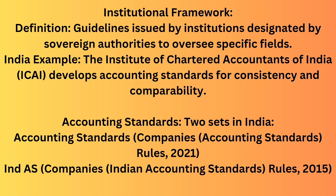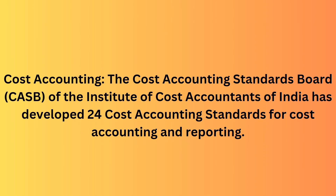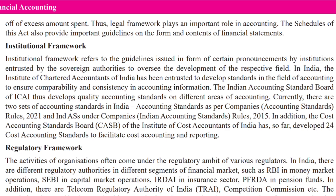Additionally, there's another team called the Cost Accounting Standards Board of the Institute of Cost Accountants of India — that's our institute. They are like specialists who focus on one part of the game, which is cost accounting. They make 24 specific rules — Cost Accounting Standards. Even cost accounting has its own accounting standards: 24 specific rules to help businesses track and report their costs properly. So just like sports need rules to make sure every team is fair and consistent, the institutional framework in accounting ensures that all businesses report their financial information in a way that's fair, comparable, and easy to understand for everyone.